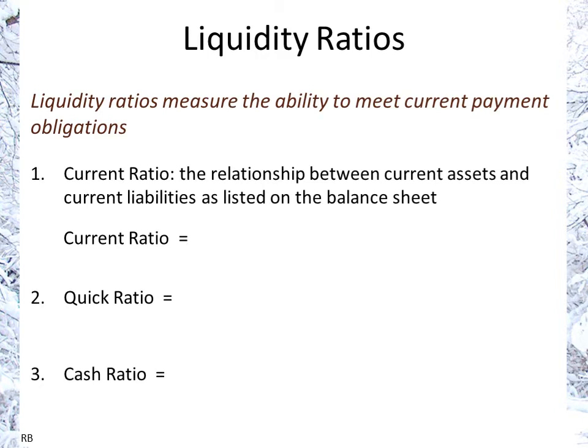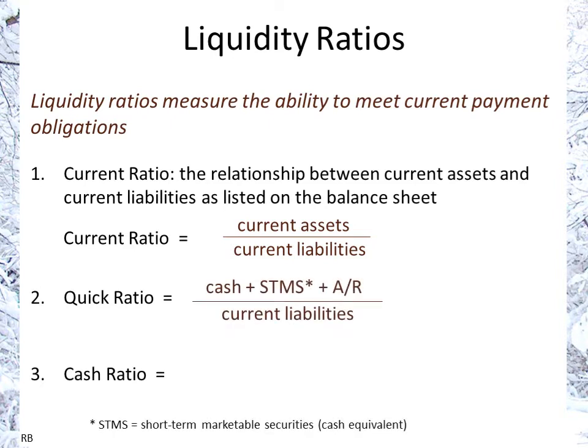The liquidity ratios start with the current ratio — the relationship between current assets and current liabilities: current assets over current liabilities. The quick ratio looks at current assets that can be converted to cash most quickly: cash, short-term marketable securities, and accounts receivable. Inventory and prepayments are removed because prepaid rent can't be recovered and inventory takes the longest to become cash. The cash ratio is the strictest version: cash and cash equivalents over current liabilities.